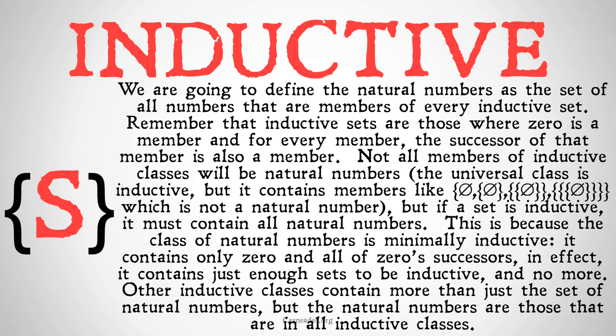We're going to define the natural numbers as the set of all numbers that are members of every inductive set. Remember that inductive sets are those where zero is a member, and for every member, the successor of that member is also a member. Not all members of inductive classes will be natural numbers. The universal class is inductive, but it contains members that are not natural numbers.